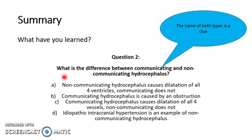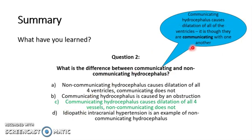Question 2: What is the difference between communicating and non-communicating hydrocephalus? The name of both types is a clue. The answer is C. Communicating hydrocephalus causes dilatation of all four ventricles; non-communicating does not. Think: if the ventricles are communicating with one another. When there's global dilatation, all of them are enlarged because they're all communicating. Whereas when there's only dilatation in a couple of ventricles, they're not communicating.